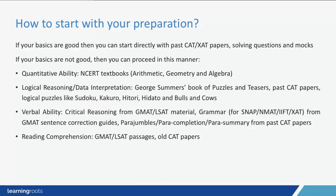If you've taken CAT before — for example CAT 2017 — you would have realized quantitative ability was probably the easiest it had been in many years, and reading comprehension was very straightforward. DILR on the other hand was difficult, but that has been the case for the last three years. We have to keep that in mind for CAT 2018 as well, and prepare keeping in mind the worst possible situation.